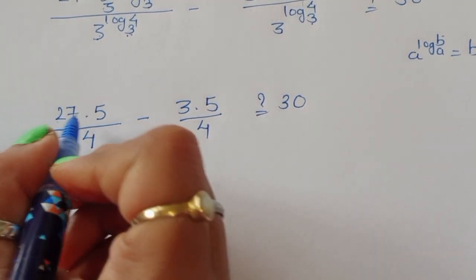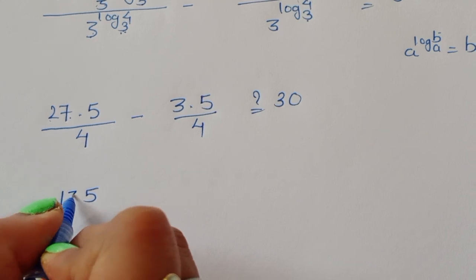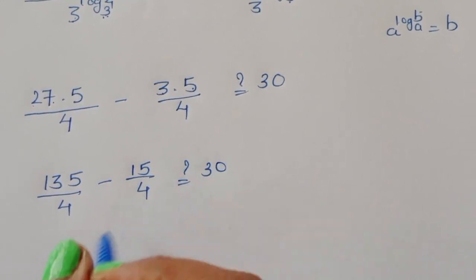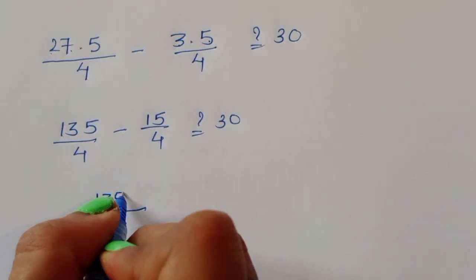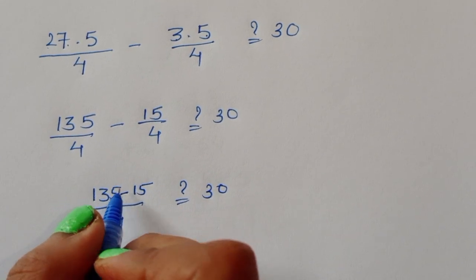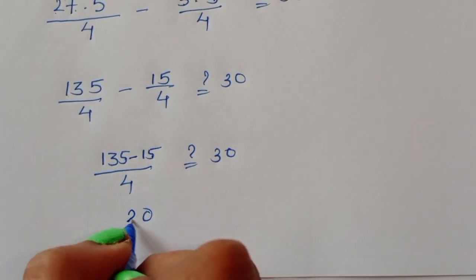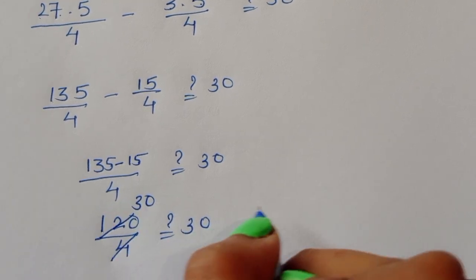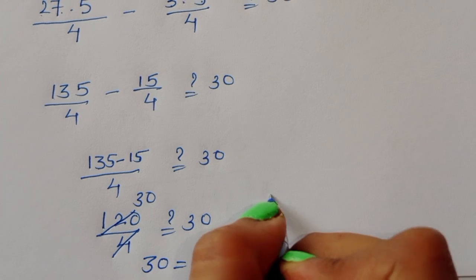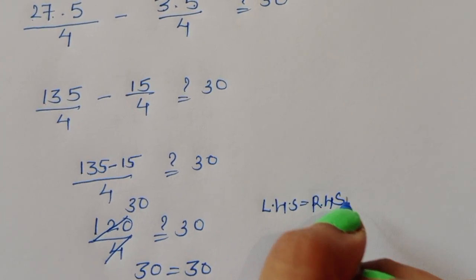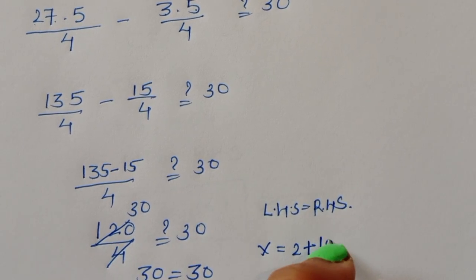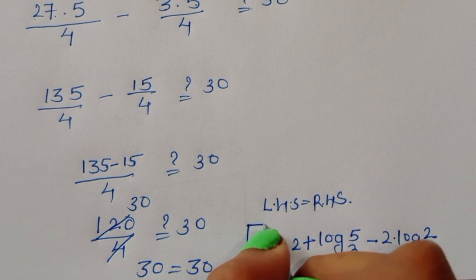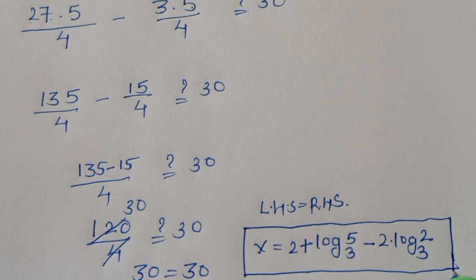Taking the LCM, we get (135 minus 15) divided by 4, which equals 120 divided by 4, which equals 30. So LHS equals RHS, confirming that x = 2 + log₃(5) - 2·log₃(2) is the correct solution. Thank you.